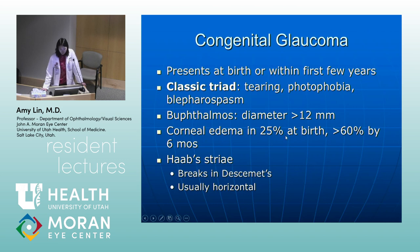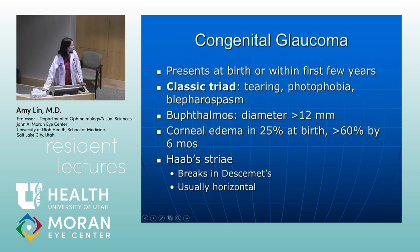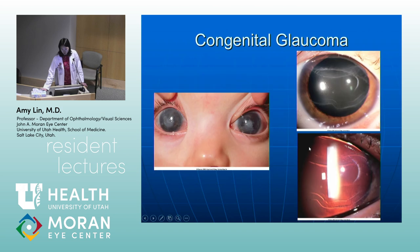Congenital glaucoma presents at birth or within the first few years of life. There's a classic triad of tearing, photophobia, and blepharospasm. Buphthalmos is the term used exclusively for congenital glaucoma, where there's a corneal diameter greater than 10 millimeters. Corneal edema is seen in 25% of patients at birth and greater than 60% by six months. Classically, you'll see Haab's striae, which are breaks in Descemet's membrane that are usually horizontal. Here is a picture of bilateral congenital glaucoma showing corneal clouding and edema, with horizontal Haab's striae visible under retro-illumination.